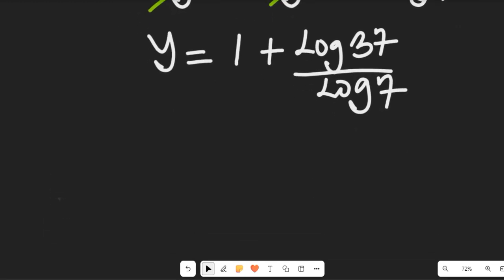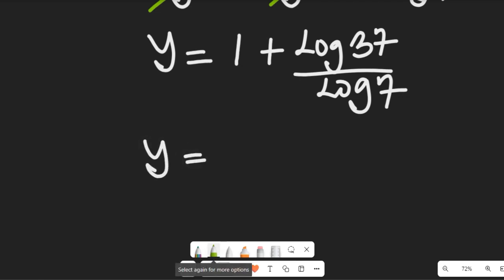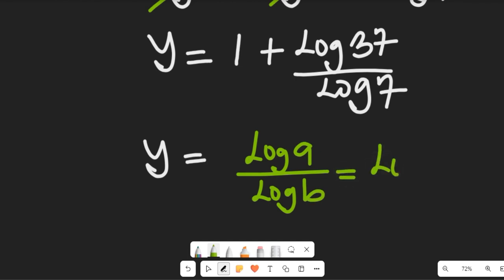Now recall one law of logarithm: if you have log of a divided by log of b, this can be equal to log of a base b, because the denominator becomes the base.